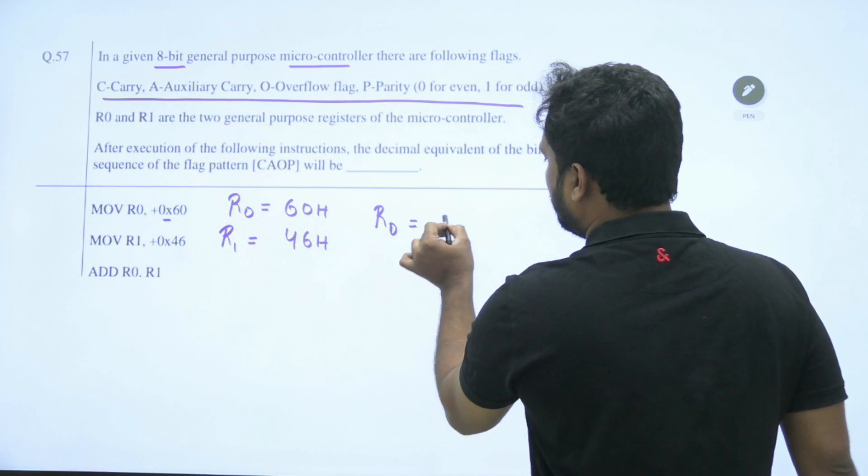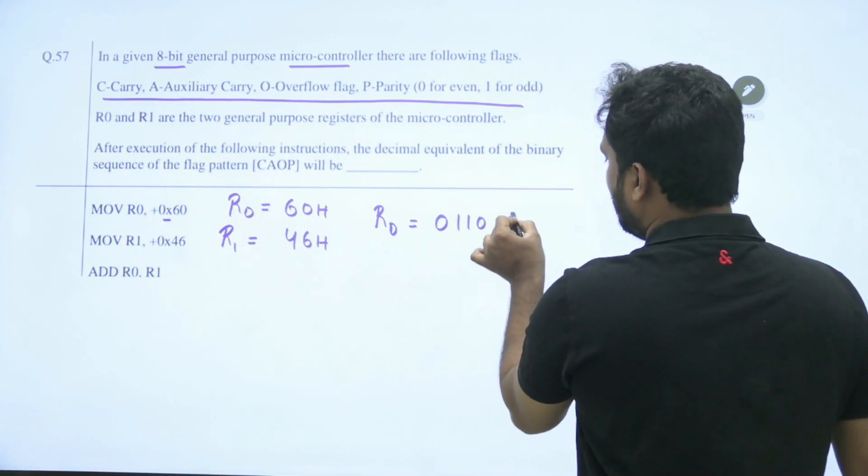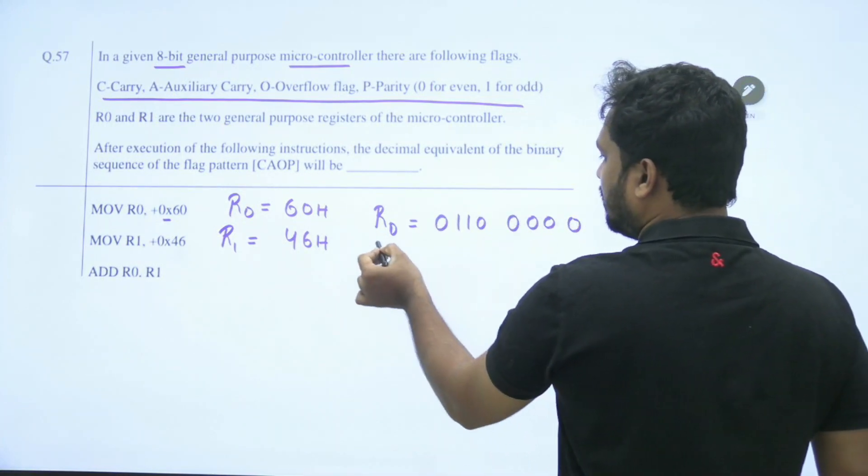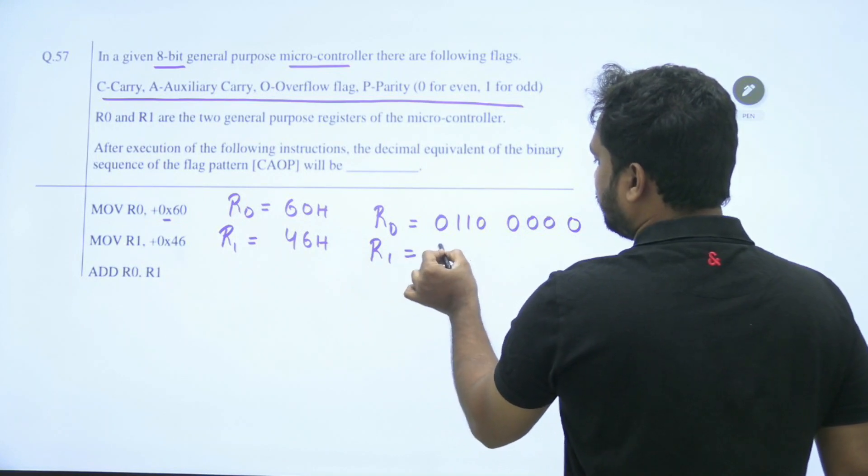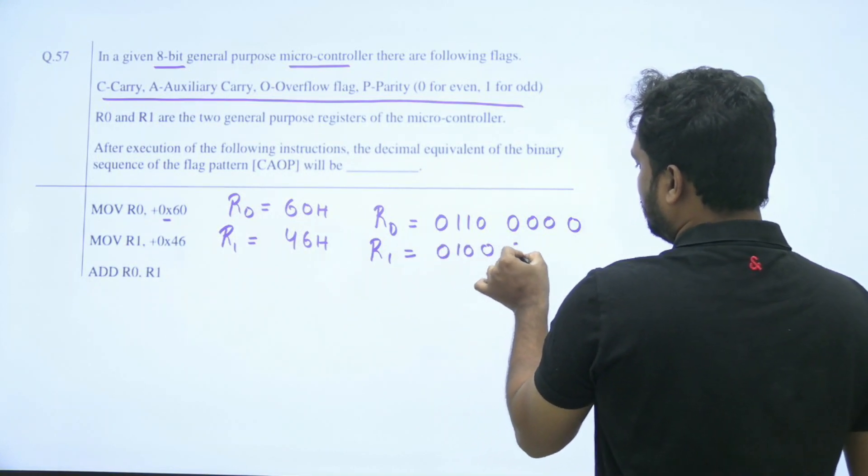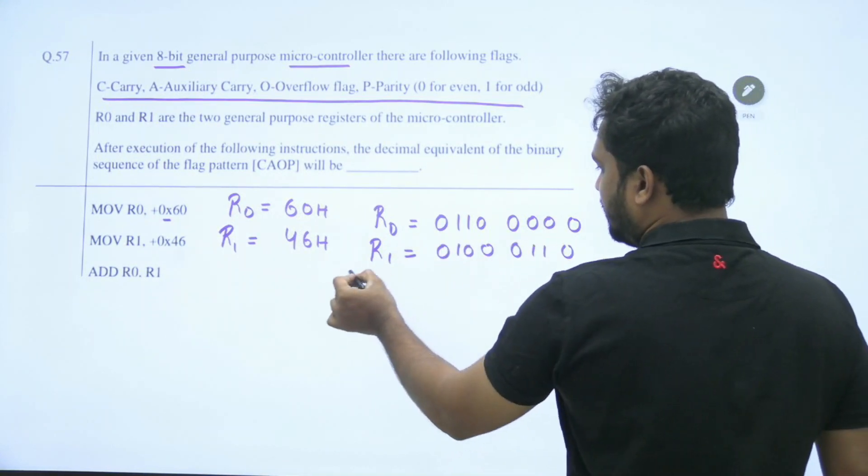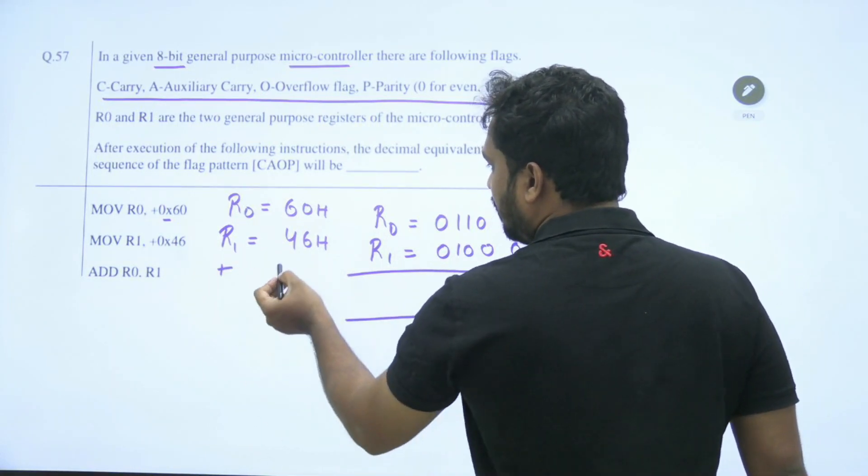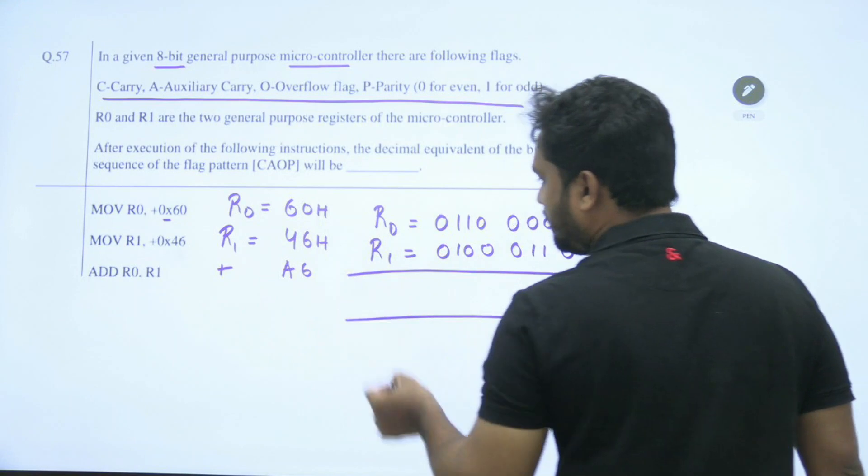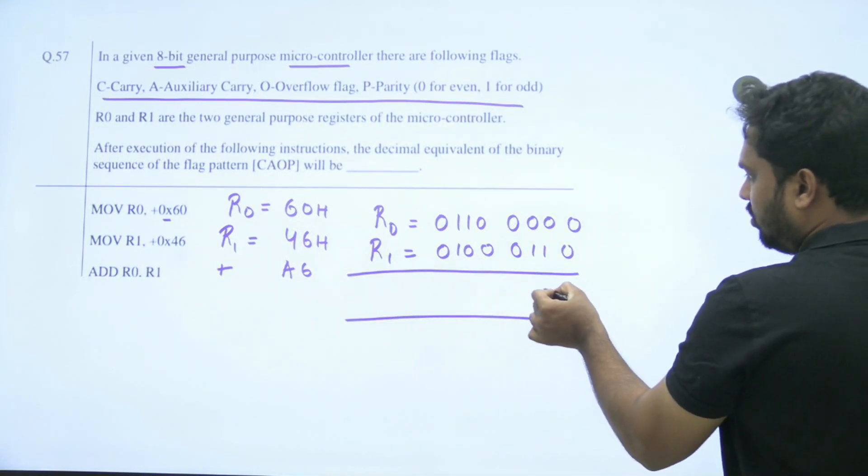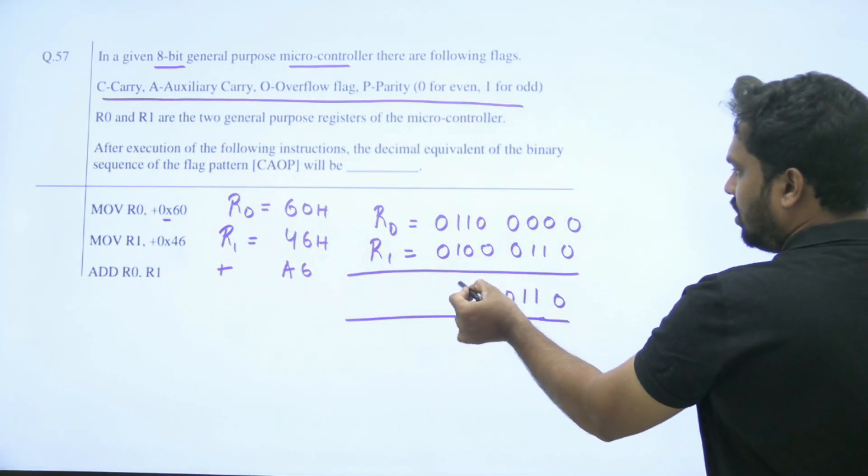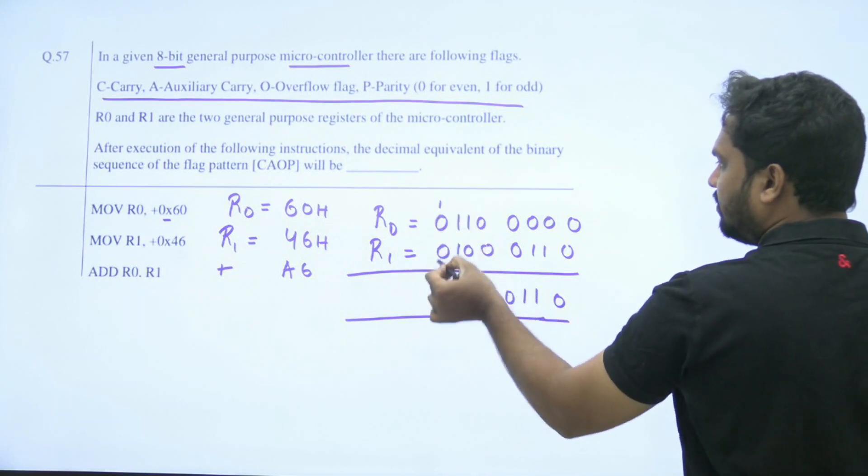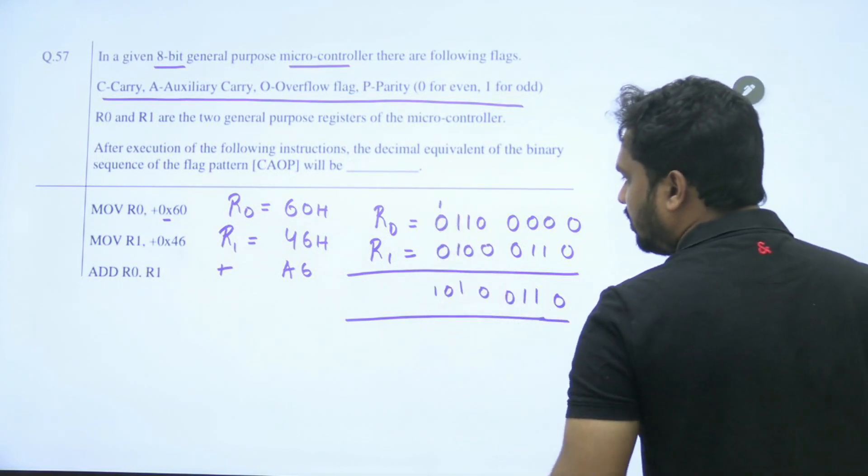R0 is 01100000 in binary, R1 is 46. Add both of them. If you add them, you get A6, right? 01100000 plus 01000110, sum 0 carry 1, 1, and no carry.